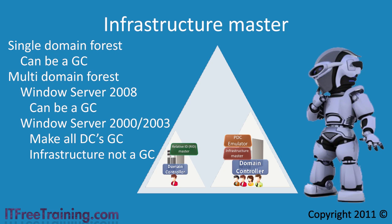Making all domain controllers global catalog servers won't affect any operation in the forest, but it does have some drawbacks — it requires more bandwidth and hard disk space. Nowadays networks are faster than when Windows Server 2000 came out, so this may not be a problem. If you do not want to make all your domain controllers global catalog servers, simply make sure your infrastructure master is not a global catalog server. Once this is done, you are free to select or deselect any domain controller to be or not to be a global catalog server.